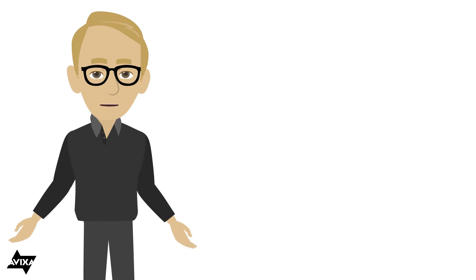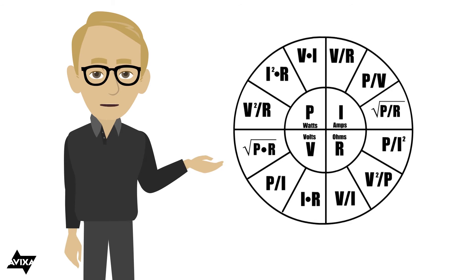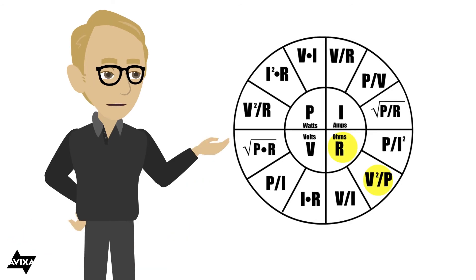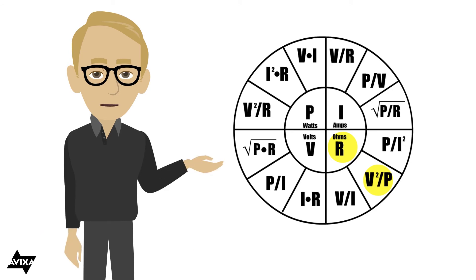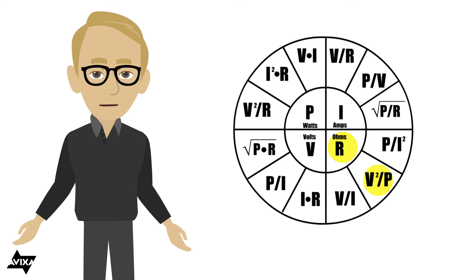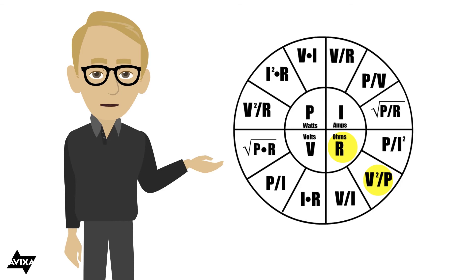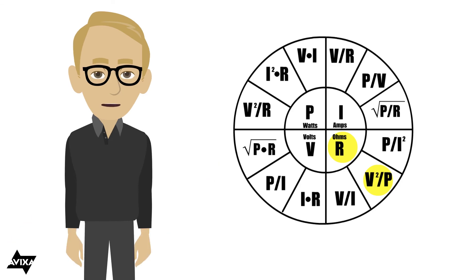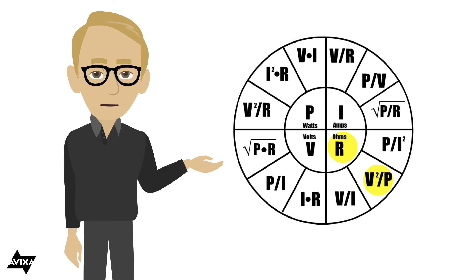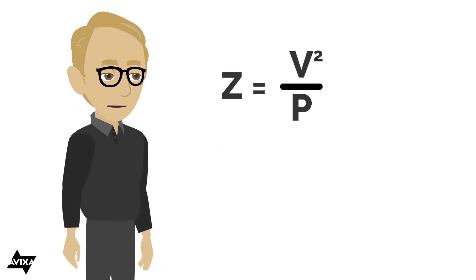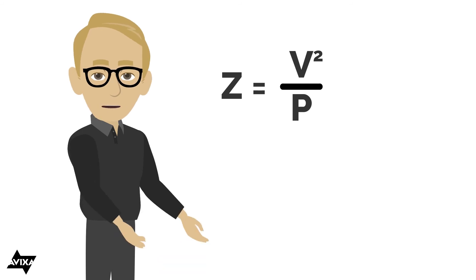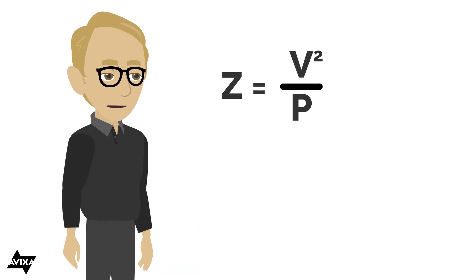Besides VIR and PIE, there's one other formula you should commit to memory for practical use: in the lower right quadrant, resistance equals voltage squared divided by power. For loudspeakers, we're actually calculating impedance, not resistance — this will get us in the ballpark. So we use Z for impedance: Z equals voltage squared over power. We'll use this in a distributed or constant voltage system.